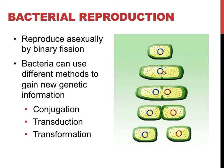The primary setback to binary fission is that it does not allow for diversity. Again, every cell produced is genetically identical. To solve that problem, bacteria can use three techniques to get new genetic information. These three techniques — conjugation, transduction, and transformation — will be described in the next few slides.